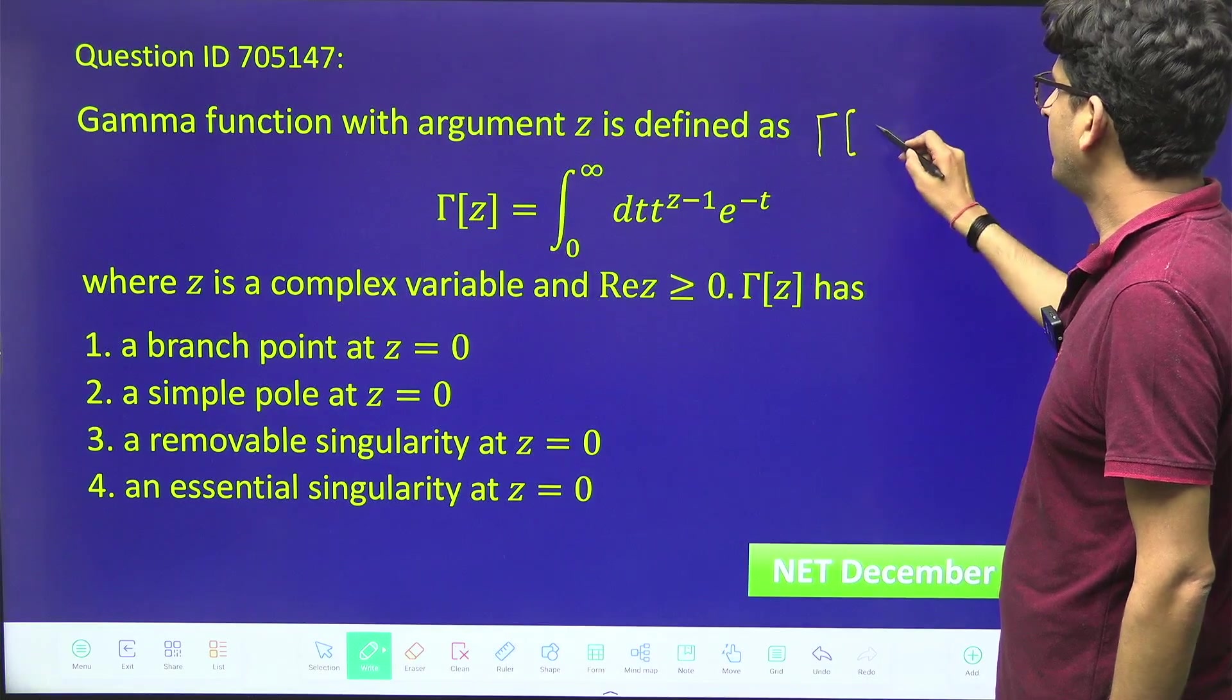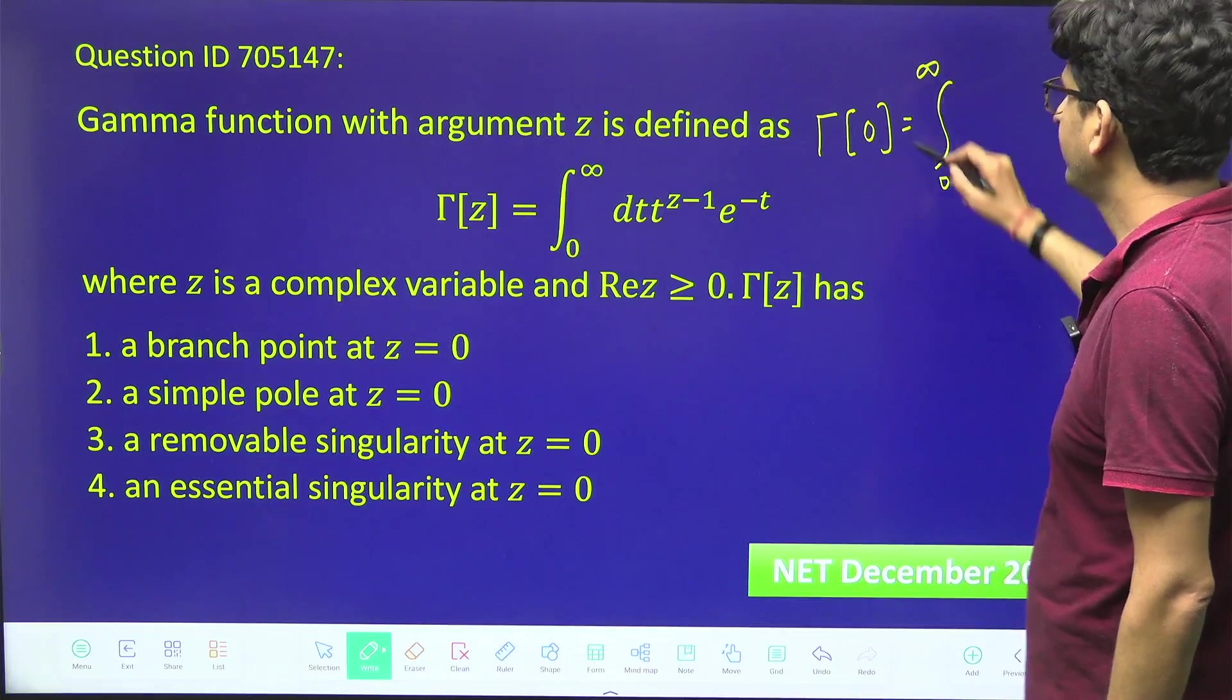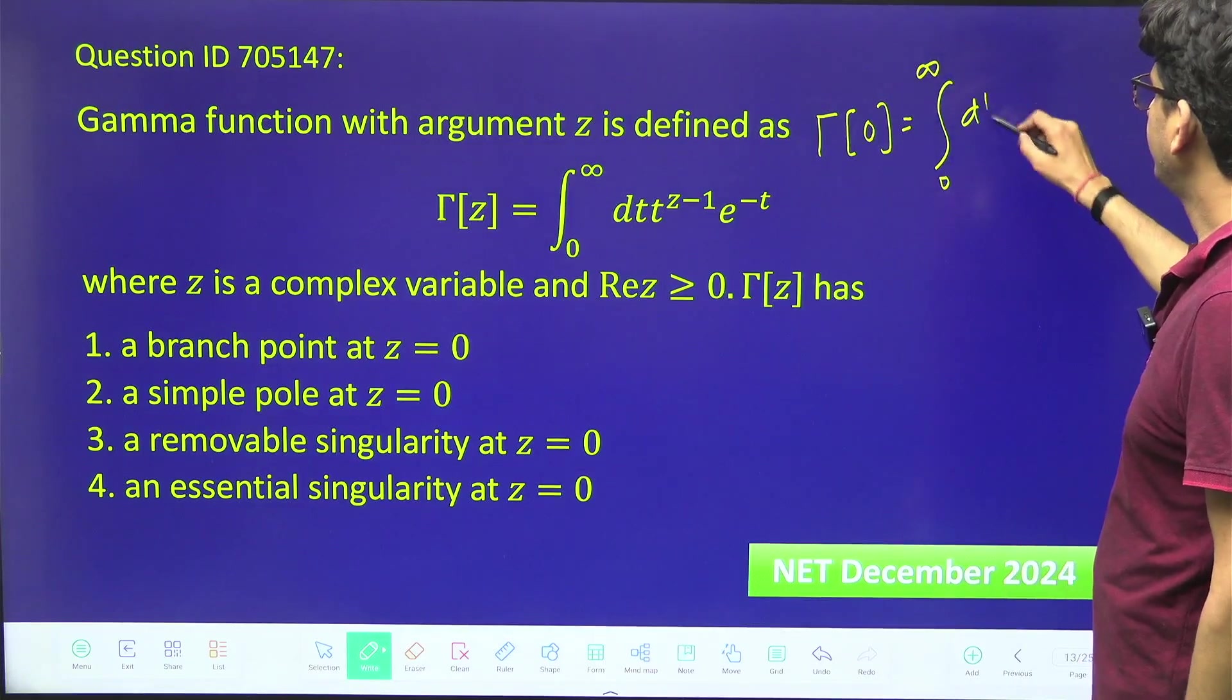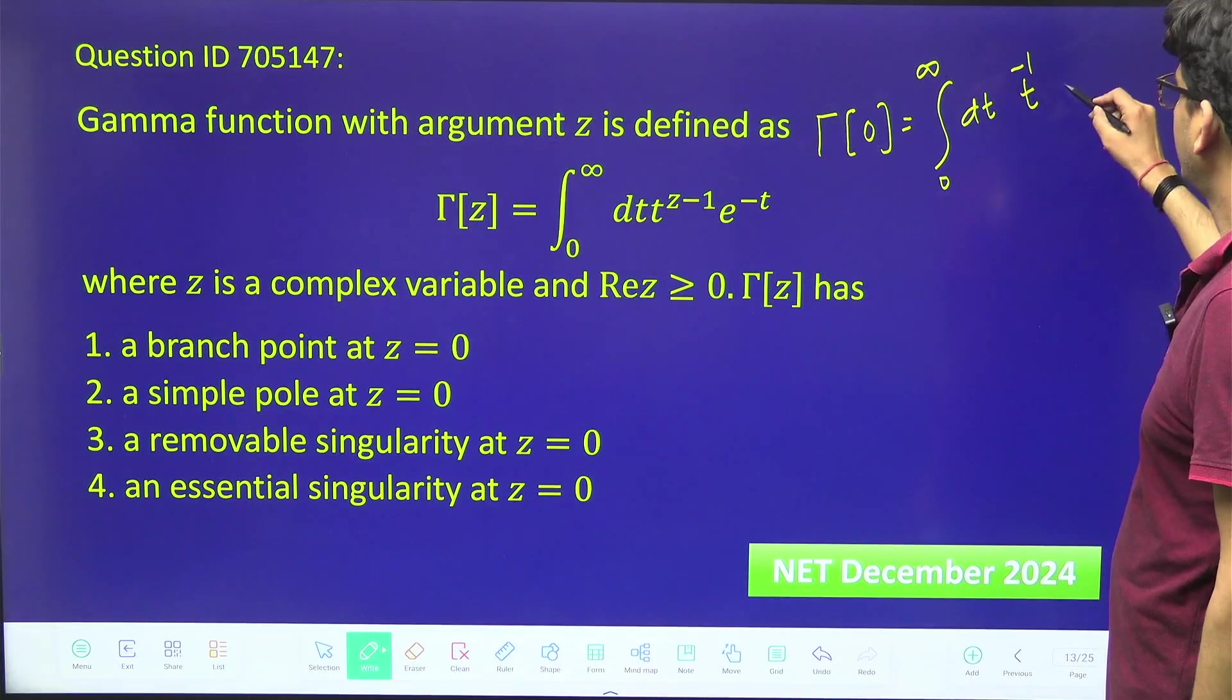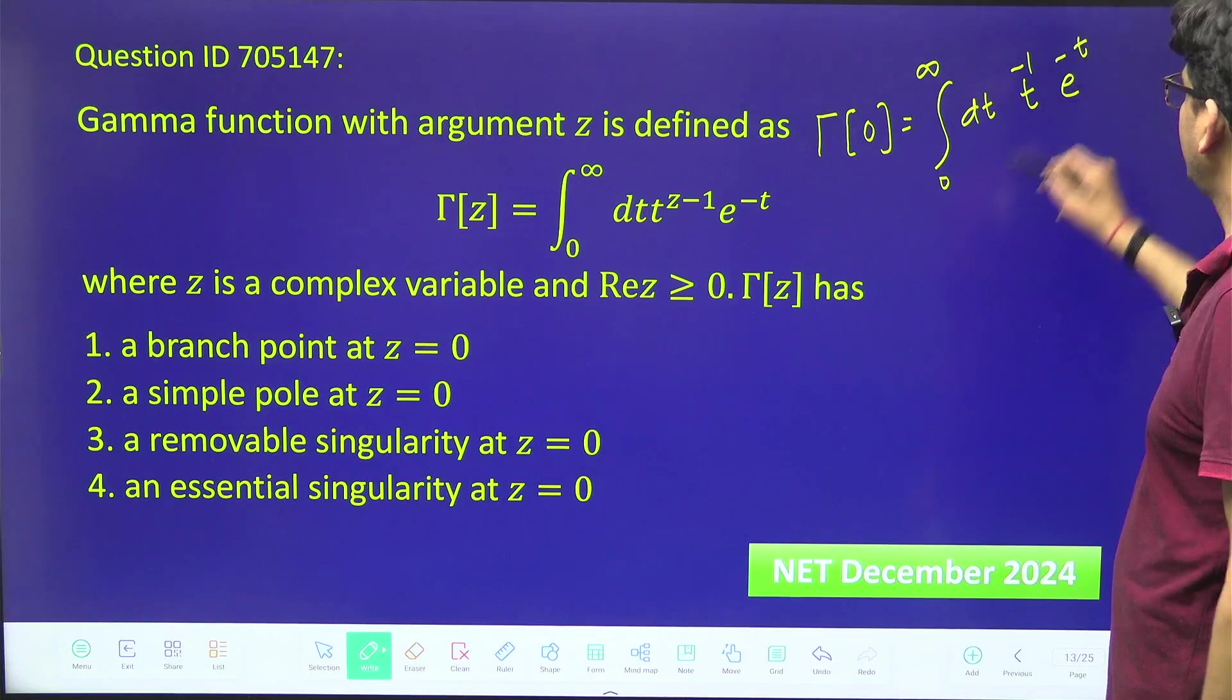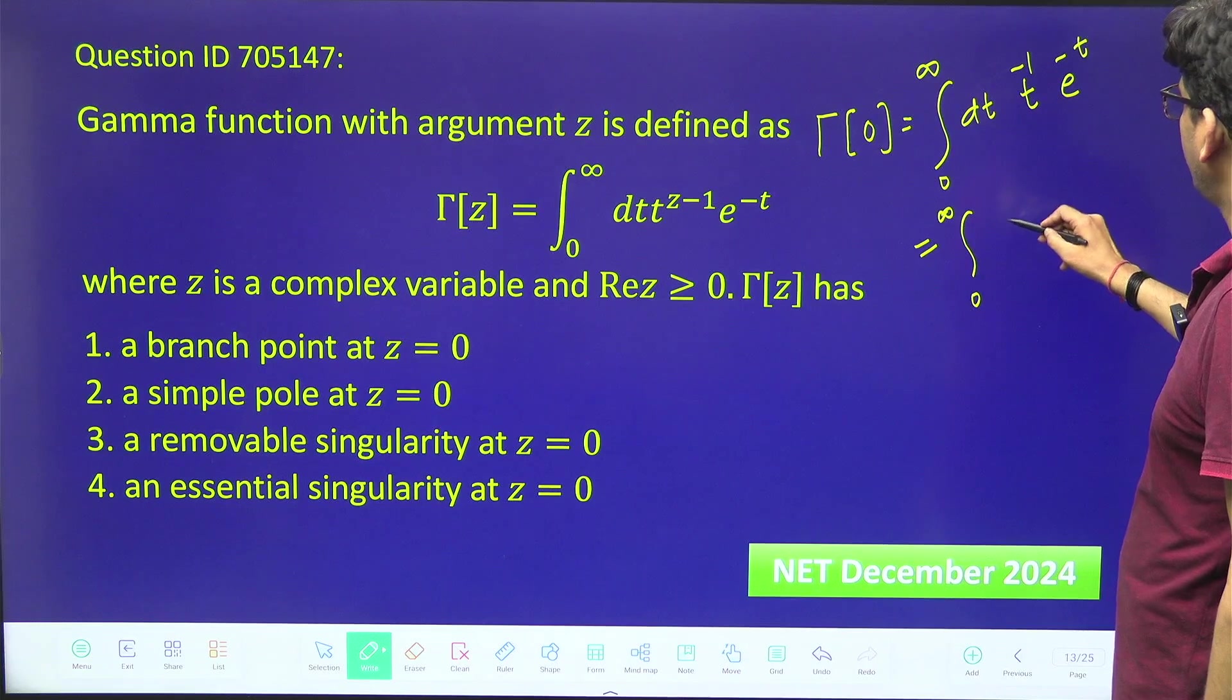So first of all, let's write what will be gamma 0. It will be the integral from 0 to infinity of dt times t to the power minus 1, e to the power minus t. That means it will be the integral from 0 to infinity of e to the power minus t divided by t, dt.